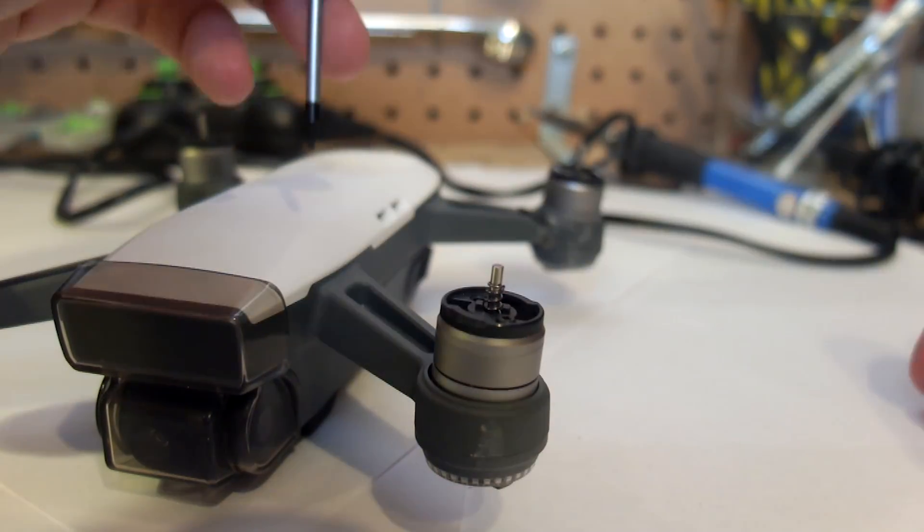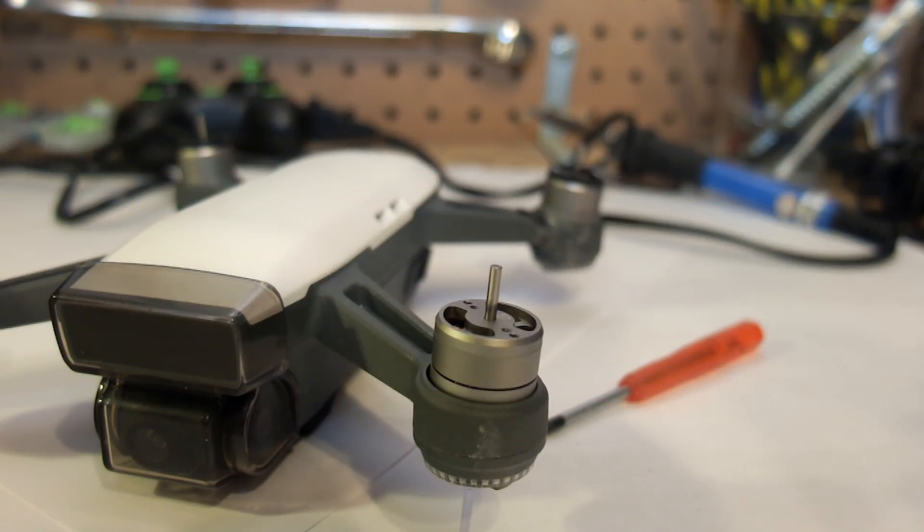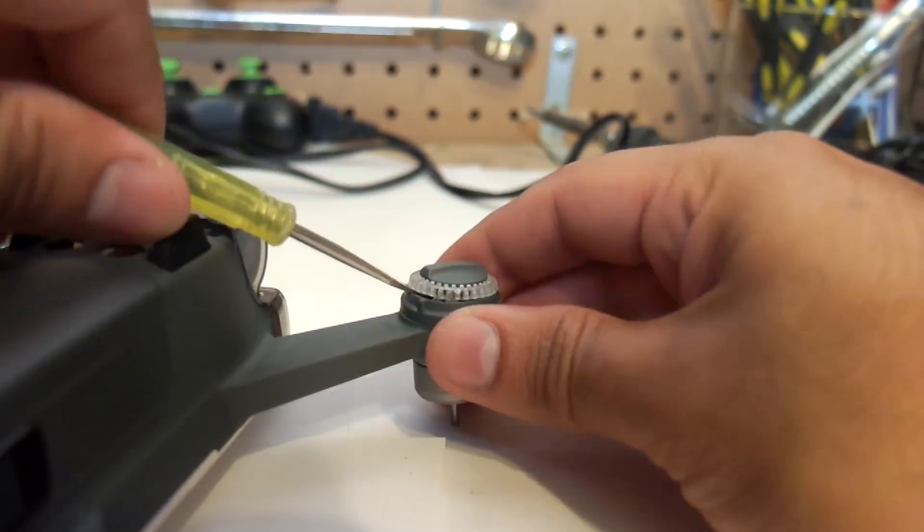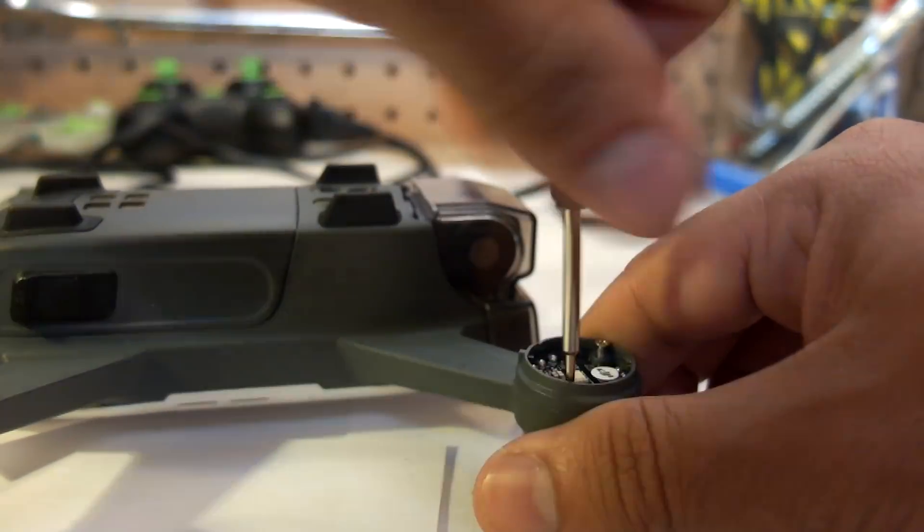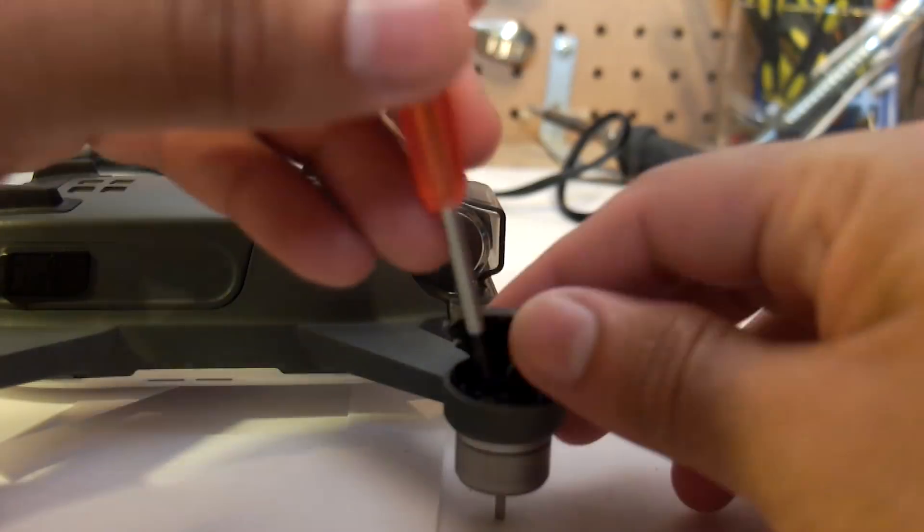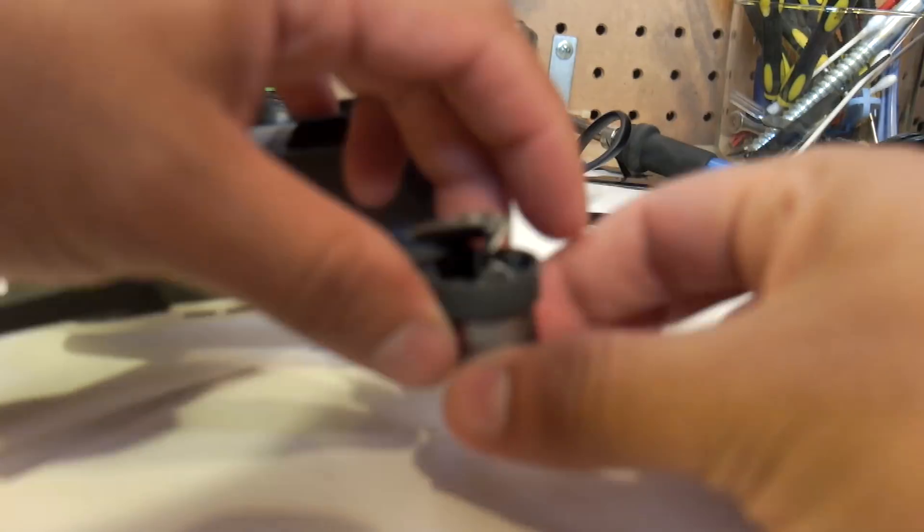First, you have to remove the two top screws from the propeller mount as well as the spring. Then you remove the propeller mount and flip the Spark over. The next step is to remove the LED cap and then remove two screws for the cap that hold the ESC. Then you simply pull out the ESC and you reveal three screws that hold the motor. Once you've done that, the motor is free.